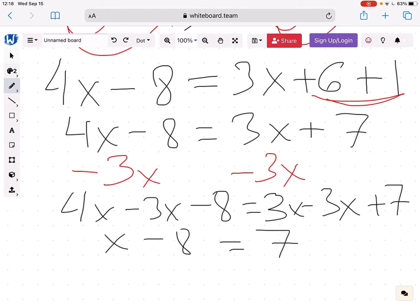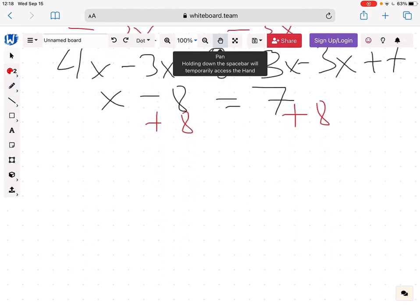So the next thing we do is we want to get rid of that minus 8 sitting on the left, bringing it to the right. And the way to do it is to add 8. Now we have to do plus 8 on both sides. We always do the same thing on both sides.